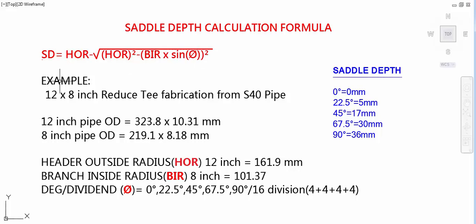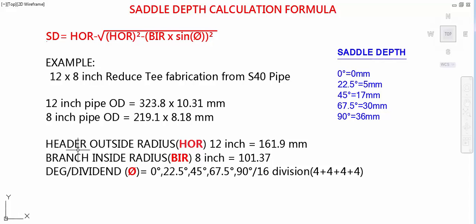Example: 12 inch into 8 inch reducing T fabrication, schedule 40. 12 inch pipe OD 323.8 into 10.31 mm, and 8 inch pipe OD 219.1 into 8.18 mm thickness. Header, HOR means header outside radius, 12 inch is 161.9 mm. Branch inside radius, BIR, 8 inch.